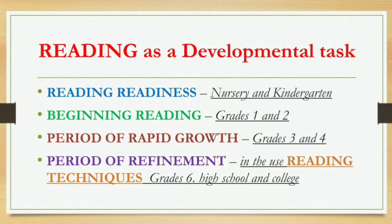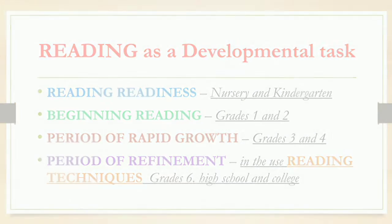The following slides present the four stages of reading development. The first stage is reading readiness, from nursery and kindergarten. The second stage is beginning reading, from grades 1 and 2. Third is the period of rapid growth, grades 3 and 4. And lastly, the fourth stage is the period of refinement and the use of reading techniques, from grade 6, high school, and college.